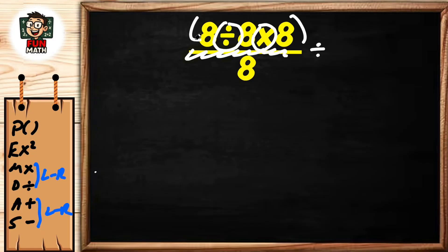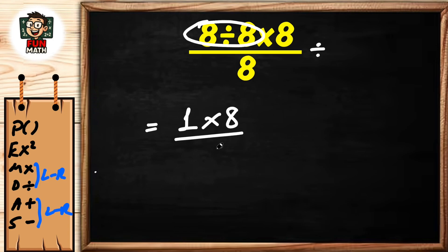Okay, first division: 8 ÷ 8 = 1. Now multiplication: 1 × 8 = 8.